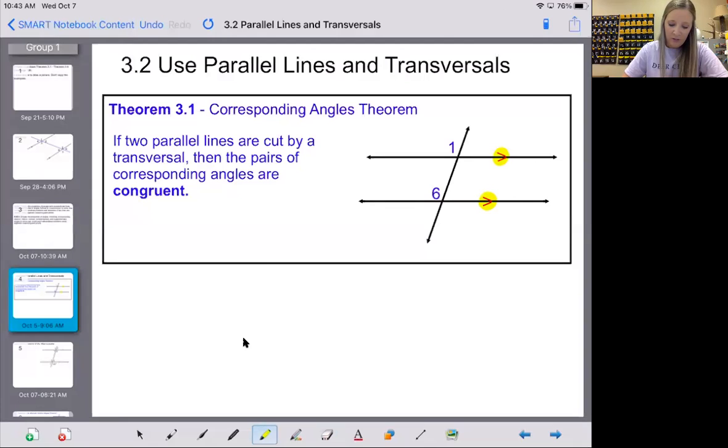We have four theorems we're going to go over today. The first one is the corresponding angles theorem. Corresponding angles are the ones where we have one on the interior, one on the exterior, but on the same side of the transversal. The corresponding angles theorem says if you have two parallel lines that are cut by a transversal, then the pairs of corresponding angles, angles one and six, are congruent. Angle one is congruent to angle six.